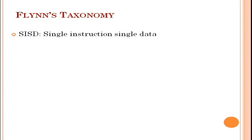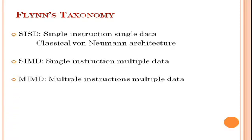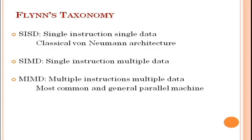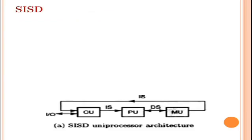Flynn's taxonomy has four categories: SISD — Single Instruction Single Data, which is the classical von Neumann architecture; SIMD — Single Instruction Multiple Data; MIMD — Multiple Instructions Multiple Data, which is the most common and general parallel machine type; and MISD — Multiple Instruction Single Data.